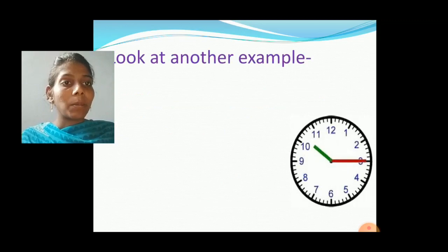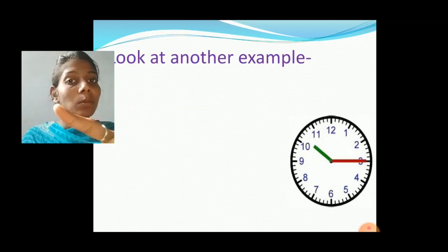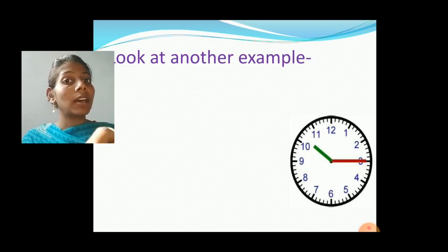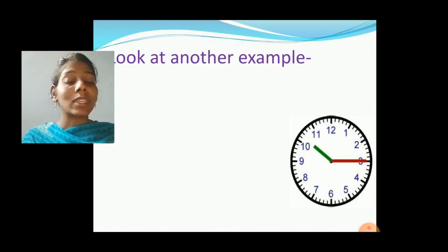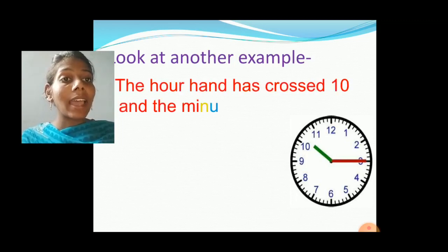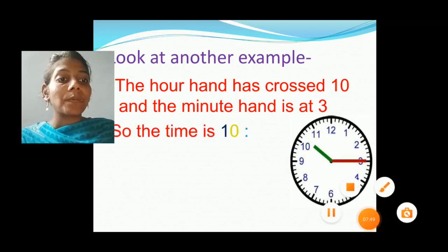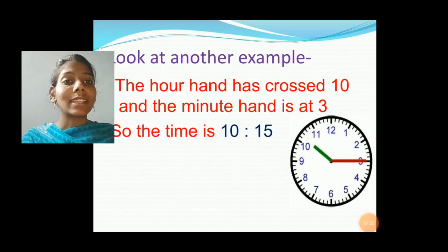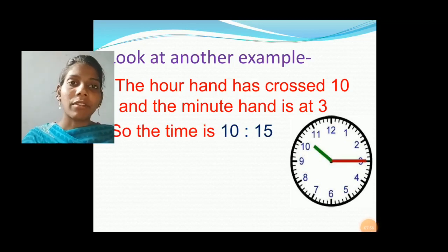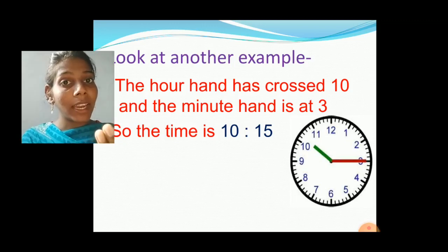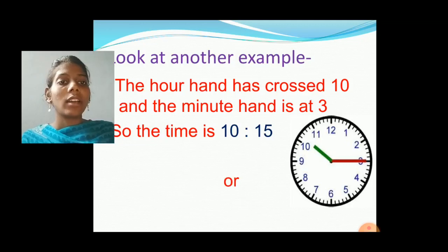See another example. Here the smaller hand — the hour hand — has crossed number 10, and the bigger hand is at number 3. 3 means 15 minutes. So the hour hand has crossed 10 and the minute hand is at 3. So the time is 10 hours 15 minutes, or instead of 15 minutes, we can write quarter past 10.